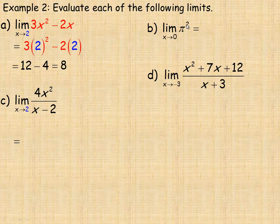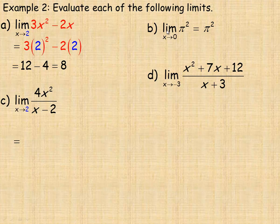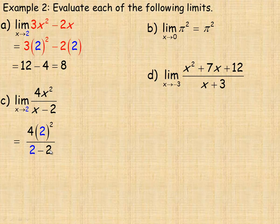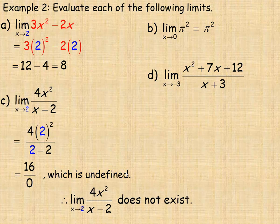In part b, pi is a constant, so pi squared is also a constant. It doesn't matter what value x tends towards — the limit would just equal pi squared. That's the first property: the limit of a constant as x approaches any value equals the constant. In part c, as x approaches 2, the denominator becomes 2 minus 2, which is 0. The numerator gives 4 times 4, which is 16. Since division by zero is undefined, this limit does not exist.